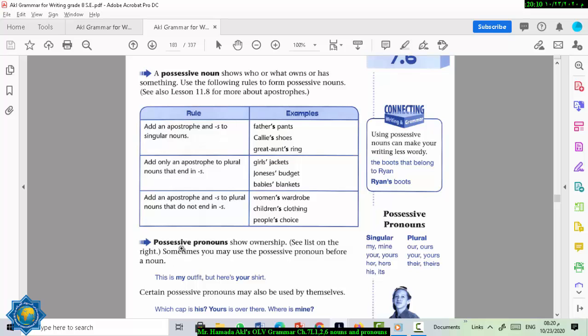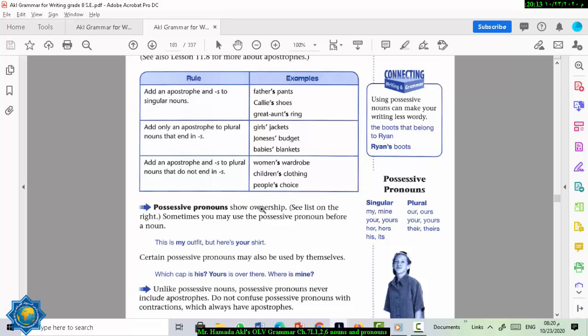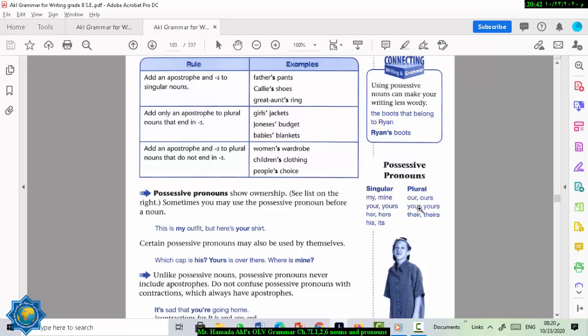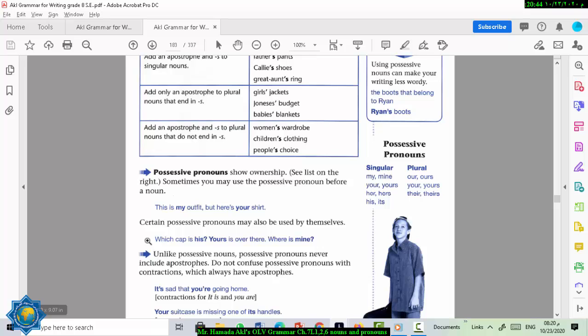Now let's move into possessive pronouns. They show ownership. Sometimes you may use the possessive pronoun before a noun. Like here. This is my outfit. My is a possessive pronoun that describes the outfit. But here is your shirt. Also your is a possessive pronoun. Words like my and mine and your and yours and her and hers and his and its and our and ours and your and yours and their and theirs. All of these are possessive pronouns. Some are singular. Some are plural.